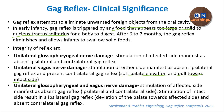If there is combined unilateral glossopharyngeal and vagus nerve damage on the same side: stimulating the affected side produces no reflex at all — neither ipsilateral nor contralateral. Stimulating the intact side produces the ipsilateral gag reflex but the contralateral gag reflex is absent.